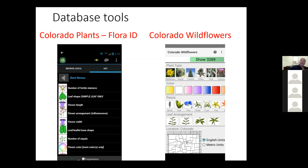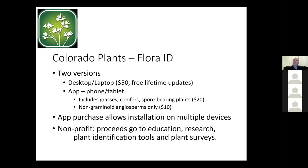Moving away from photo recognition, we're going to quickly talk about some database tools — another option sort of in between your traditional field guide and a dichotomous key. The two we're going to look at are Colorado Plants, put out by Flora ID, and another app called Colorado Wildflowers — a similar name, which makes it a little confusing.